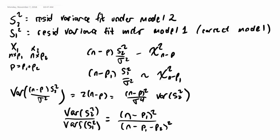Which means that the variance of S2 squared is going to be larger than the variance of S1. The numerator, this number, is always going to be greater than 1.